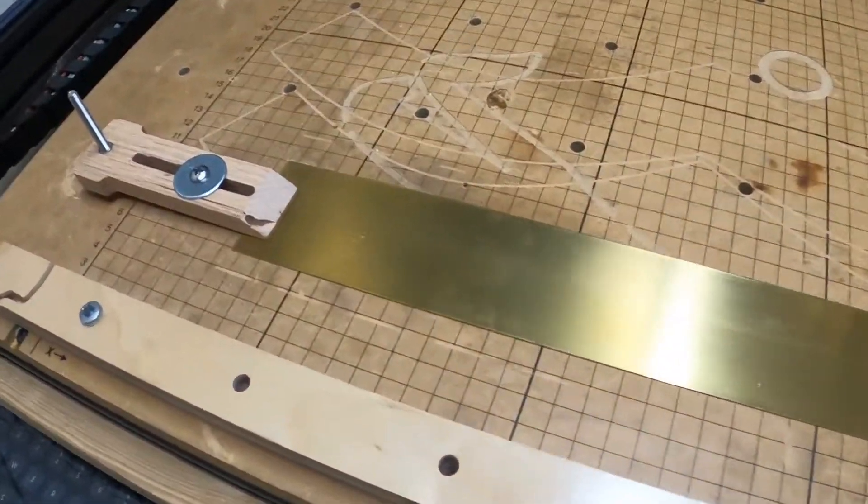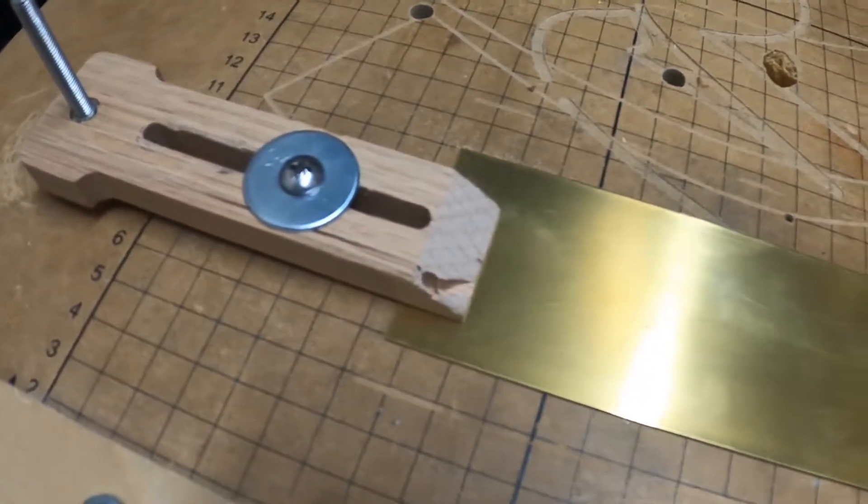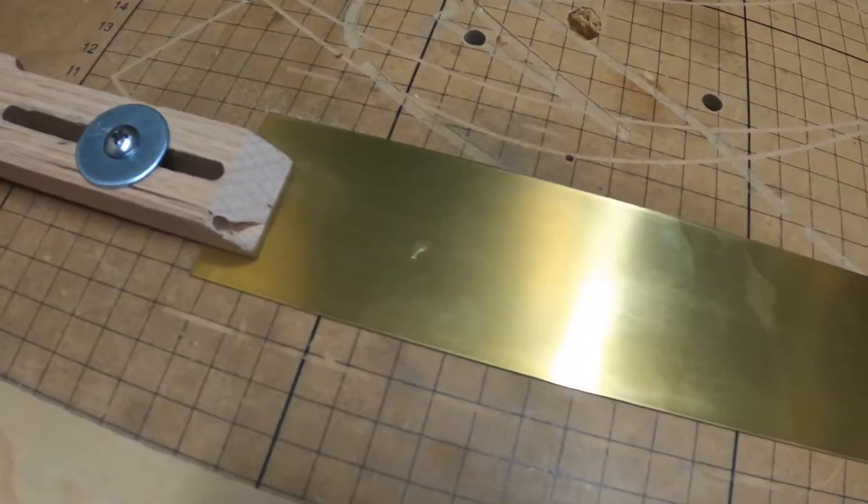Today we're going to try and do some engraving in brass. We've got a piece of brass here about 2 inches by 16 or 20 inches long.